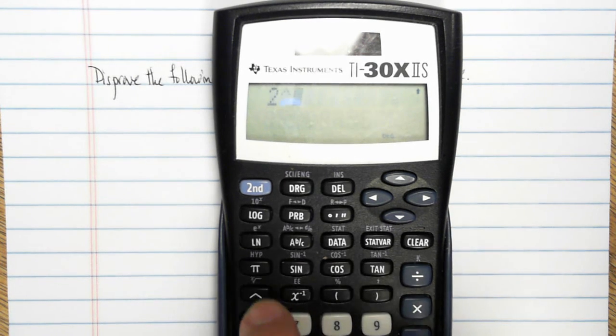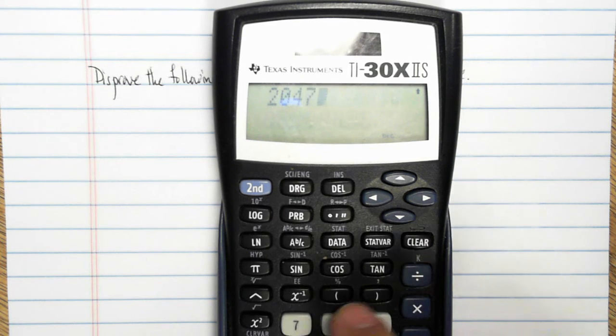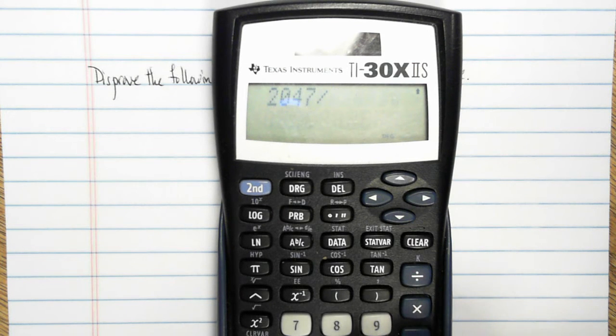Let's go to the next one up. 2 to the 11th minus 1. 2 to a prime number minus 1. Now we're getting to some big numbers. 2047. And let's see if this is prime. Well, this is going to take a while. 2047 divided by 2. Well, 2 clearly doesn't work.